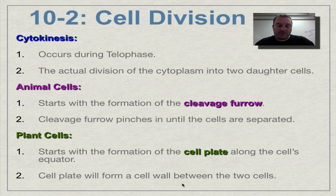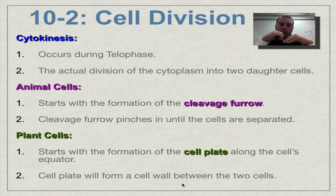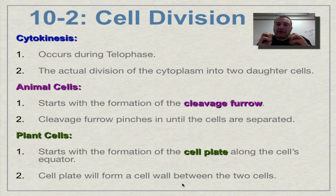Now in an animal cell, you're going to have the formation of what is called a cleavage furrow. Cleave means to cut. So think of a row in a field where a plow has gone through — you're starting to put a dent in the cell and it's going to cleave or cut it in half eventually.